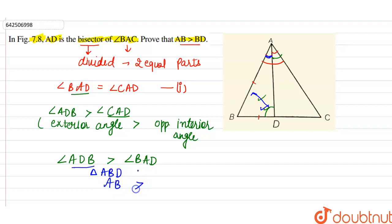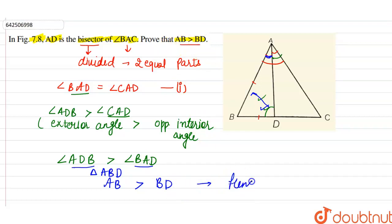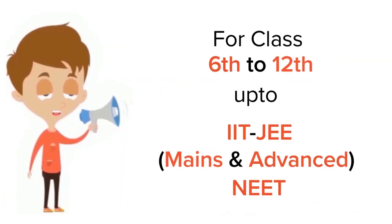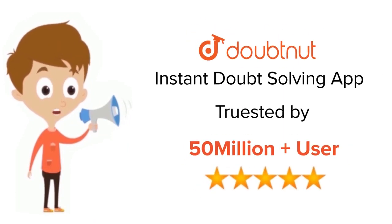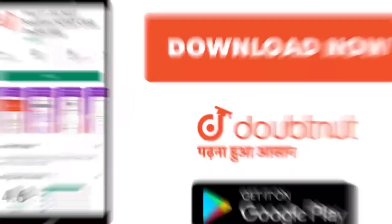Therefore, we can say AB is greater than BD, which is what we had to prove — hence proved. For class 6 to 12th, IIT JEE and NEET level, trusted by more than 5 crore students, download the DoubtNet app today.